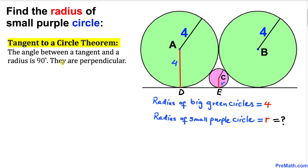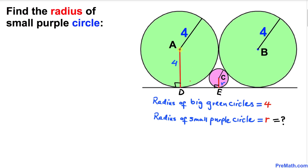Let's recall the tangent to a circle theorem: the angle between a tangent and a radius is 90 degrees — they are perpendicular. So in our case, radius AD is perpendicular to the tangent line, meaning this angle is 90 degrees. Likewise, radius CE is also perpendicular to this tangent line.